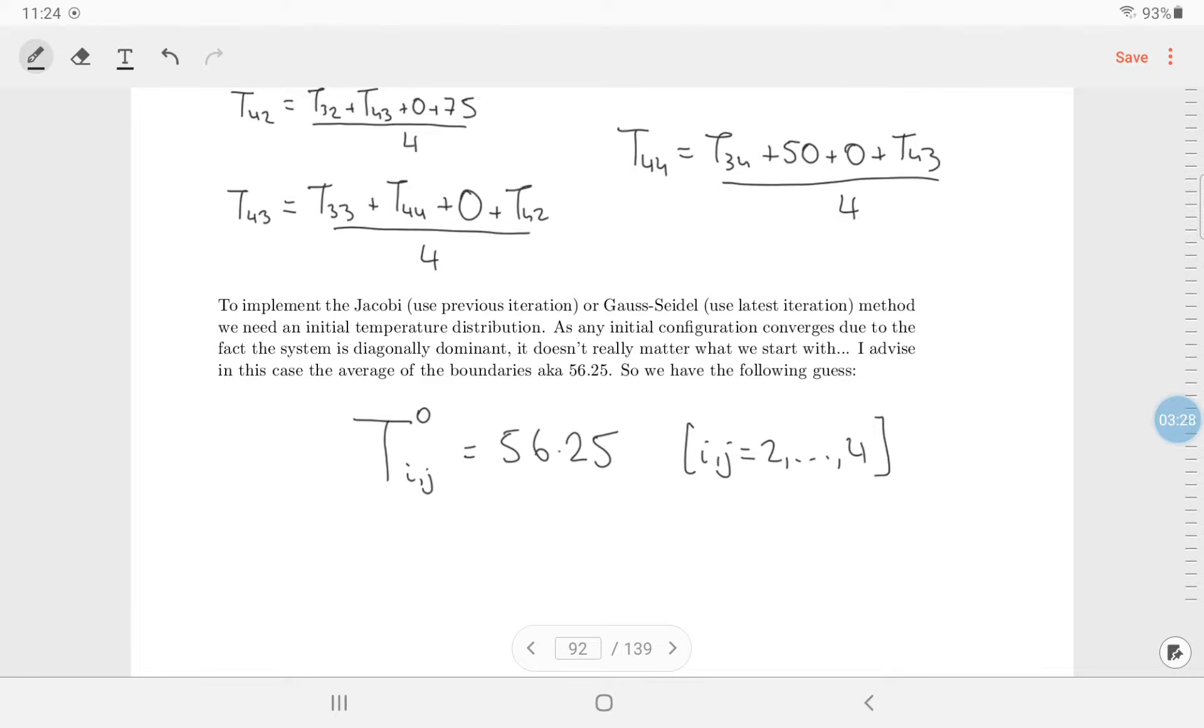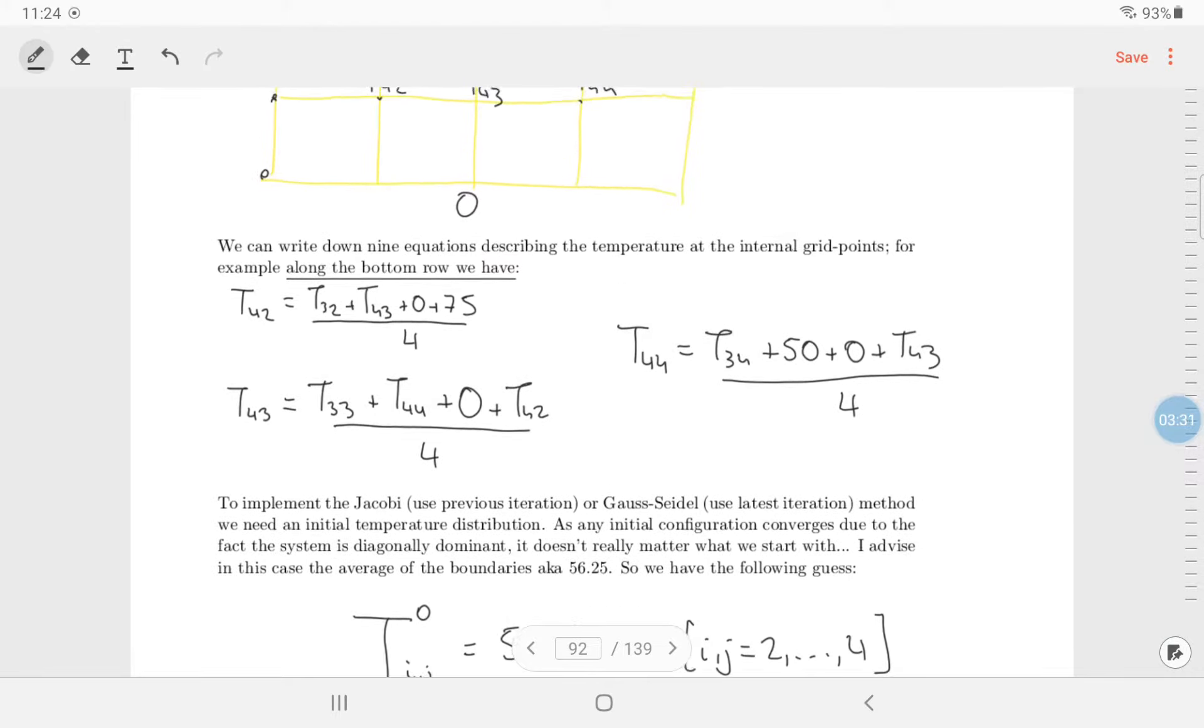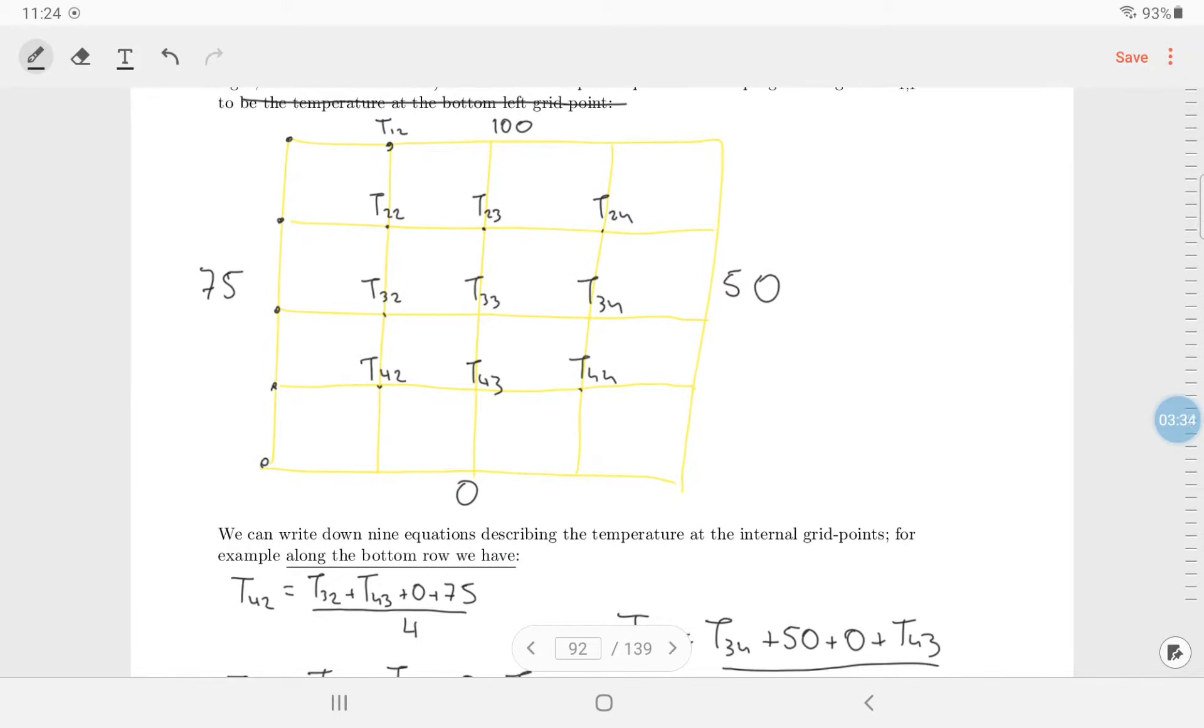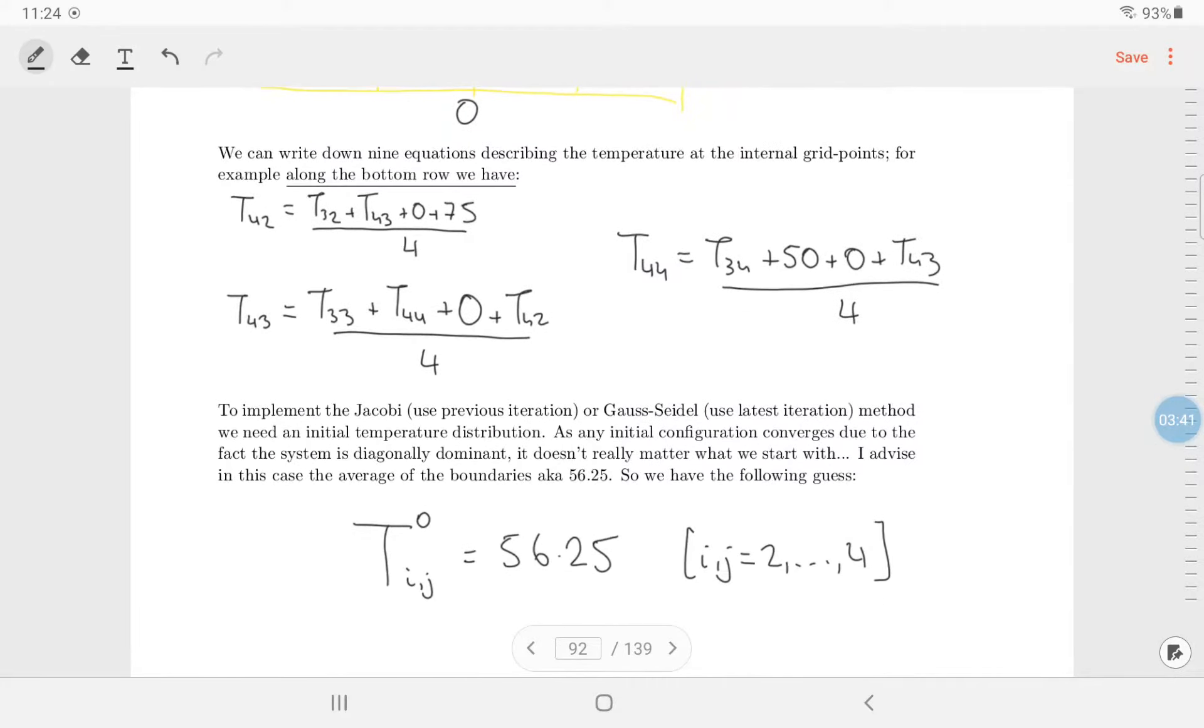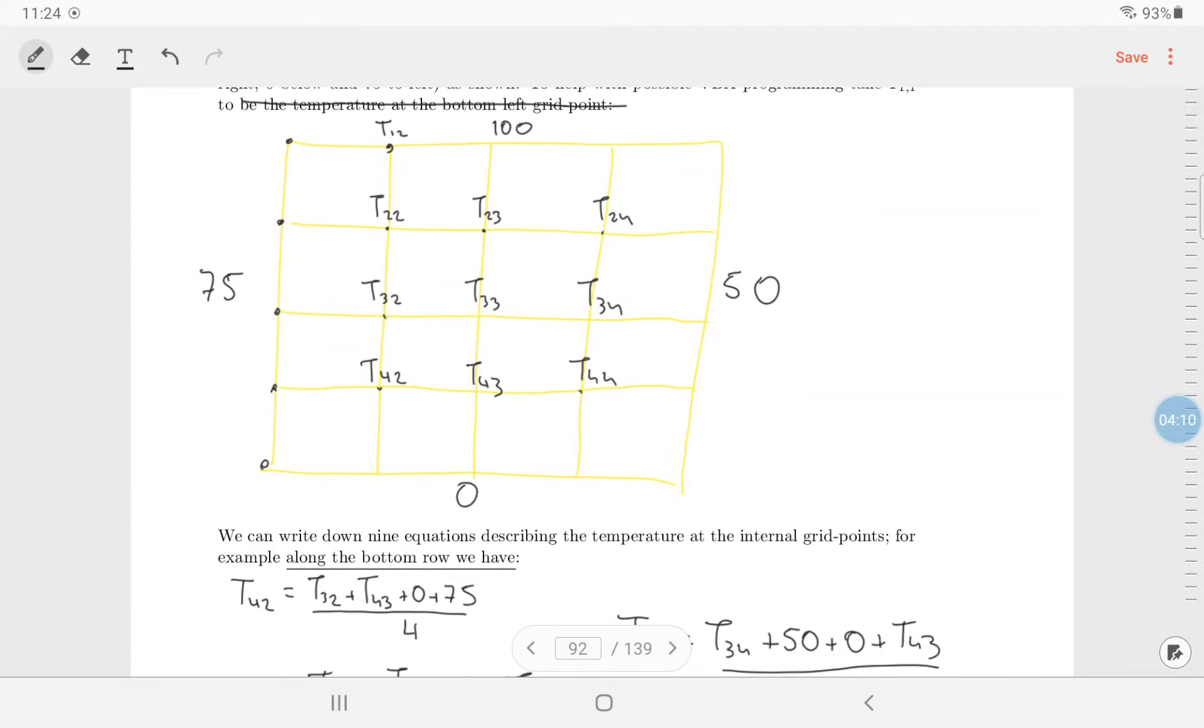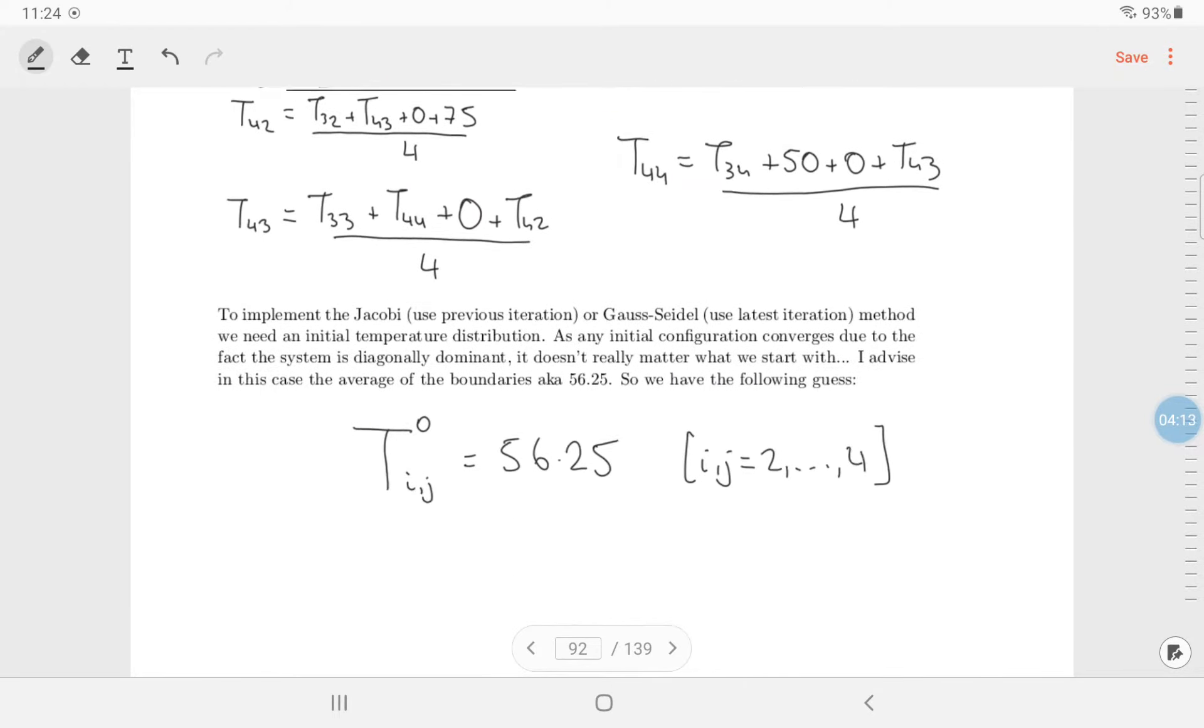So that's going to be our initial temperature. So we're going to take all of them. We write like this T0, all of the internal ones, IJ equal to 56.25. Now, maybe we'll just specify that I and J go between two and four. So that's our initial guess, but it really doesn't matter. Now, one thing that we will talk about is if you use the Jacobi method and say start with zero, then the intermediate calculations, what we're doing, we haven't kind of specified this, we're going to be throwing in the 56.25 into those equations.